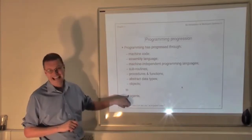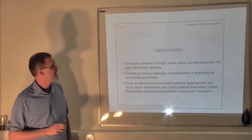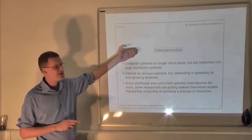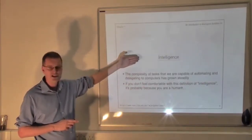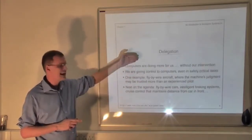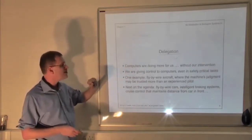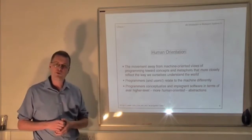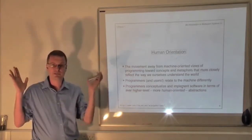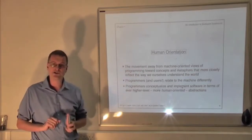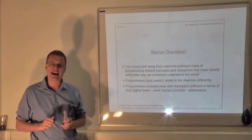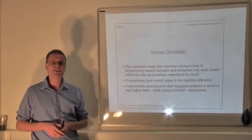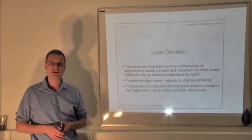So we've seen these five trends: ubiquity — computer processing power everywhere; interconnection — processors that can communicate with one another; intelligence — capable of solving more and more complex tasks; delegation — we hand over control to these things; and finally, human orientation — the way we interact with them more resembles how we interact with people. That's the future of computing. And what I'm arguing is that these five trends lead us to something like multi-agent systems.